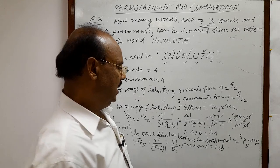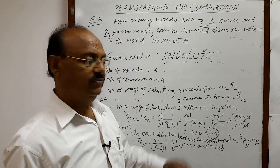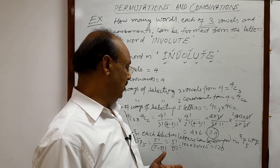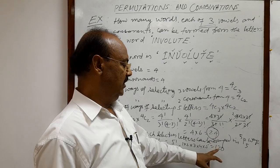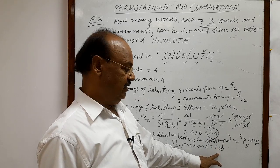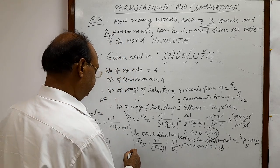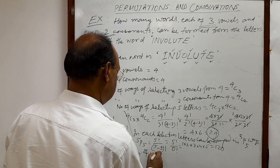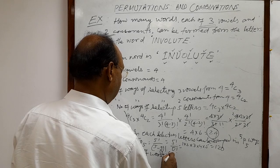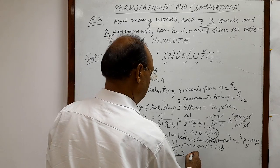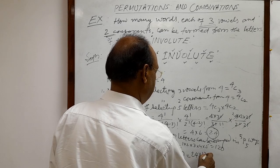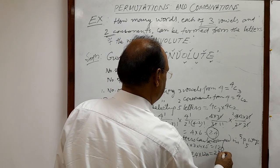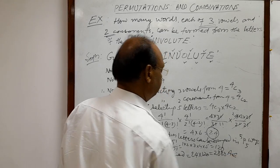We have 24 selections of letters, and in each selection 120 arrangements are possible. So the total number of possible words, with or without meaning, will be 24 × 120. Therefore, the number of words formed is equal to 24 × 120 = 2880. This is the answer.